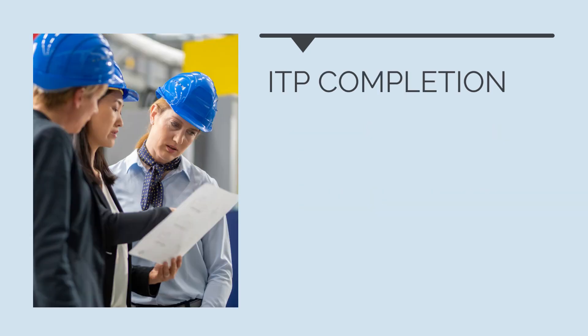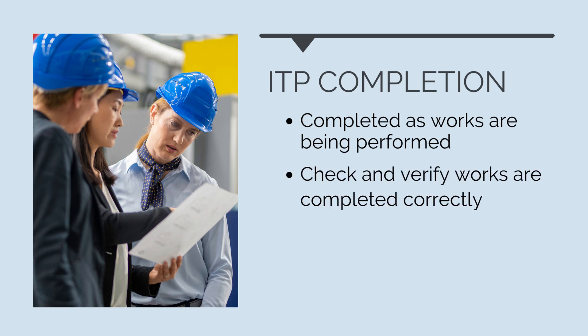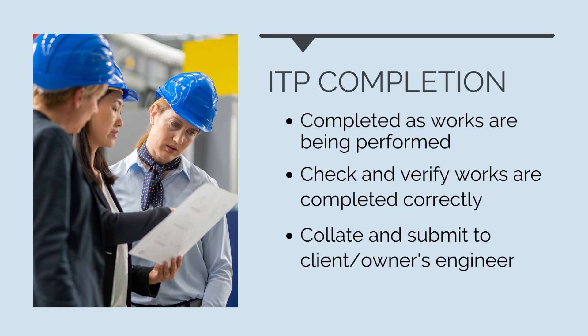The ITP for the activity is then completed as works are being performed on site. All tests and inspections documented should be performed to check and verify the works are being completed correctly. Once closed out, this is submitted to the client or owner's engineer for their review and sign off. Any failures will result in a non-conformance report, but we'll cover those later on in the course.